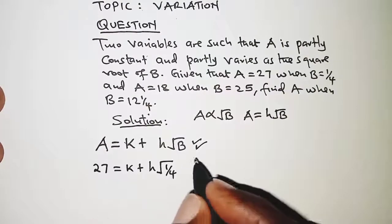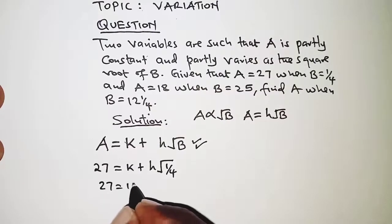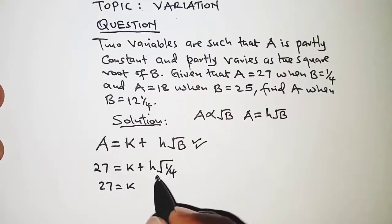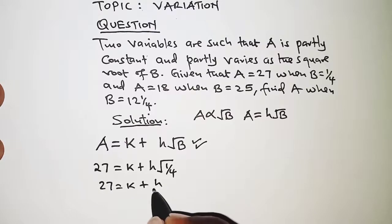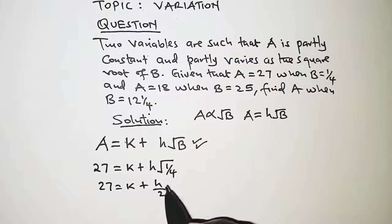This will be 27 is equal to k. The square root of a quarter is a half, so we have plus h over 2.